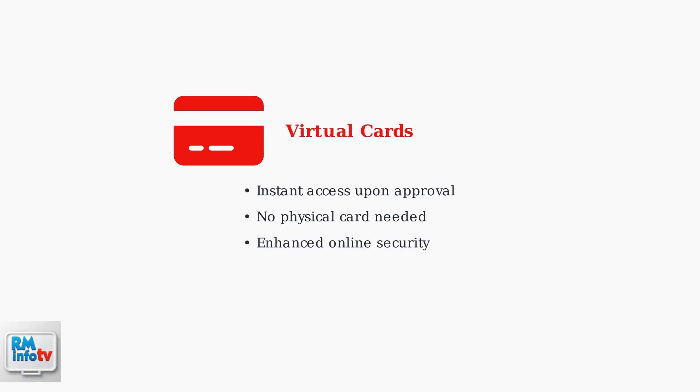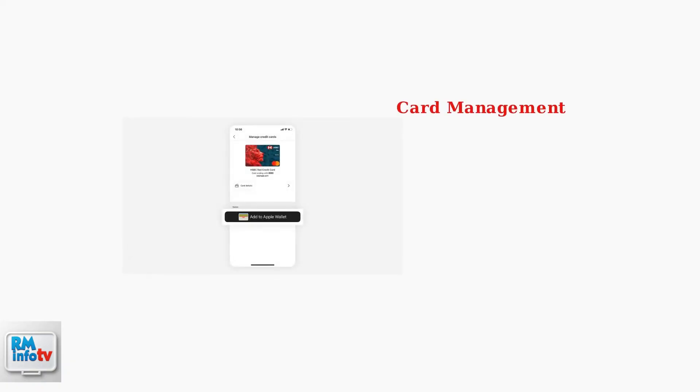HSBC Virtual Cards represent a modern approach to digital banking security. These digital cards provide instant access to your card details through the mobile app without waiting for a physical card to arrive. The HSBC app provides a clean interface for managing your virtual cards. You can view card details, add them to mobile wallets like Apple Pay, and access all necessary information securely within the app.